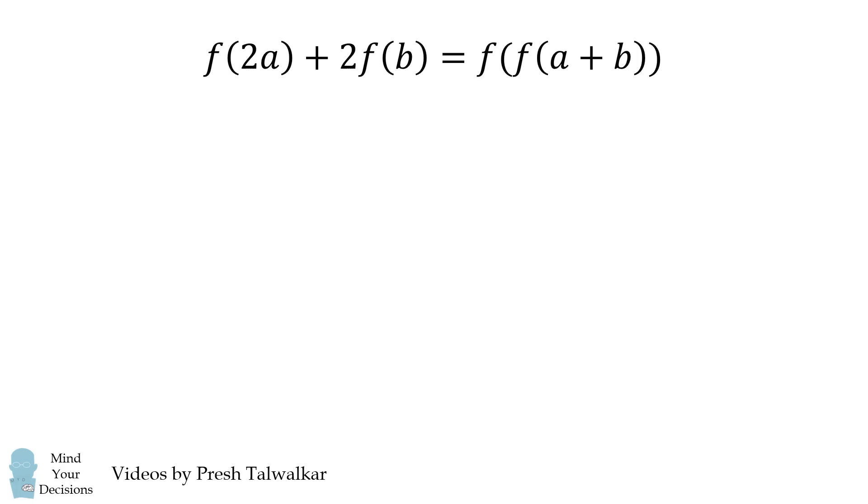So we'll get started by trying some special values. Suppose A is equal to zero. We'll take this equation and we'll substitute in A is equal to zero. We get F of zero plus two times F of B is equal to F of F of zero plus B. Zero plus B simplifies to be B. Next,